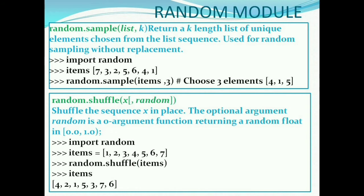The sample function in random module will generate a list of specified length from the list sequence. Items is a list and random.sample items, 3 will choose any three elements from the list items.